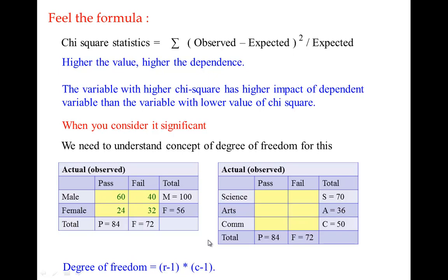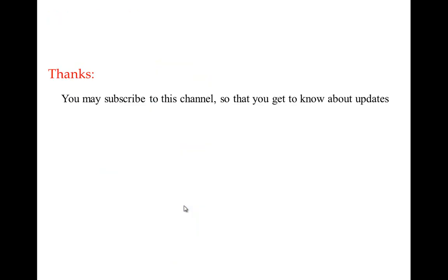For each degree of freedom, the chi-square statistic for a 95% confidence level (5% significance level) has been tabulated in statistics books. If the calculated chi-square value is more than the tabulated value, you consider it significant. Thanks for your time — please subscribe to this channel to get updates.